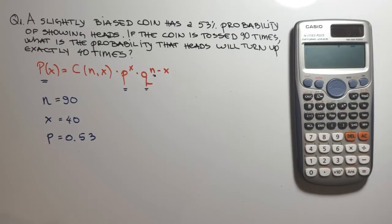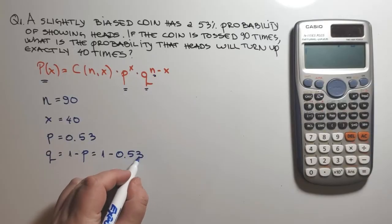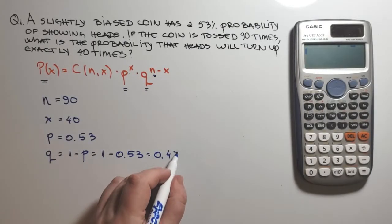This means that the probability of failure is 47%, or Q is equal to 1 minus P, that equals to 1 minus 0.53, or 0.47.